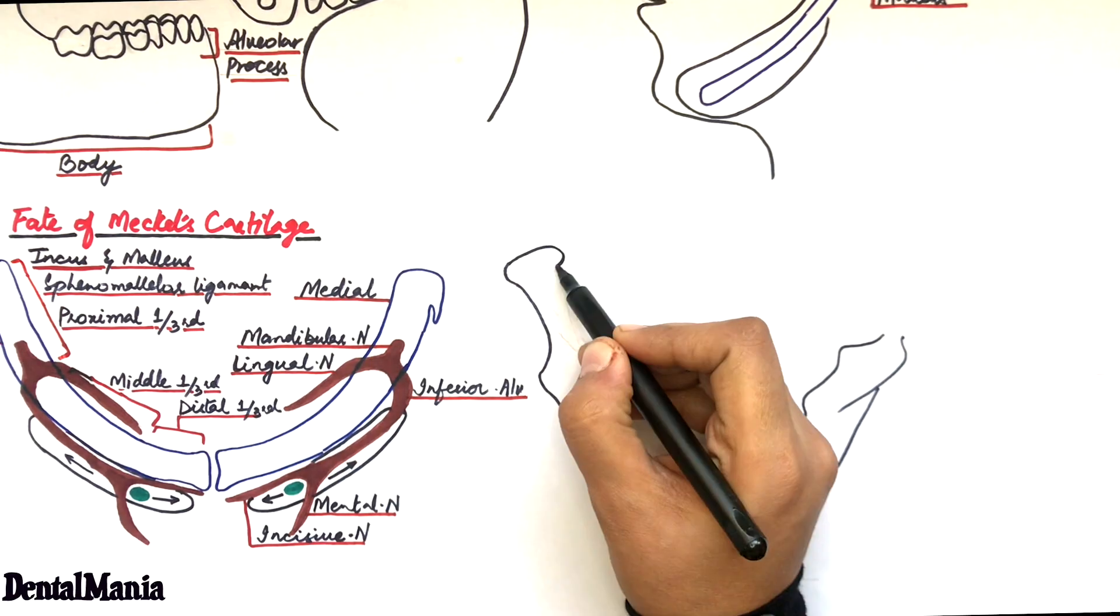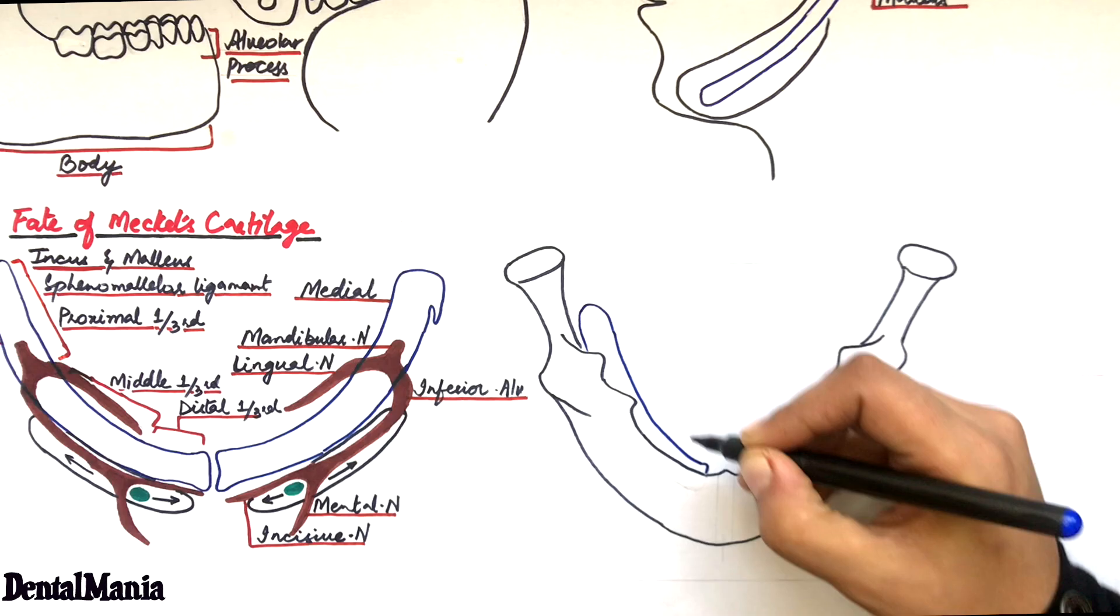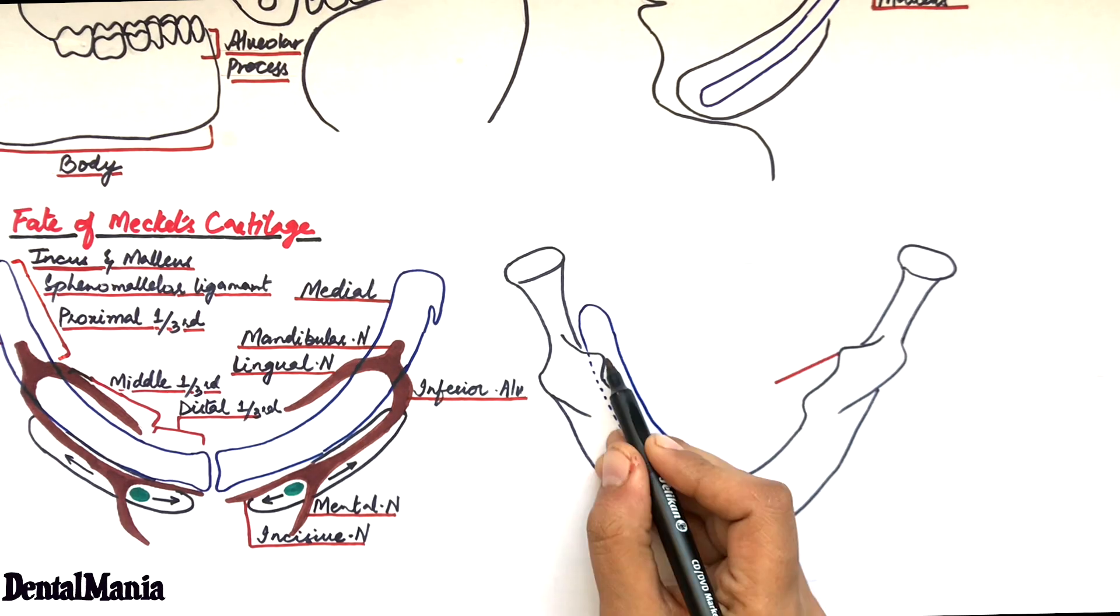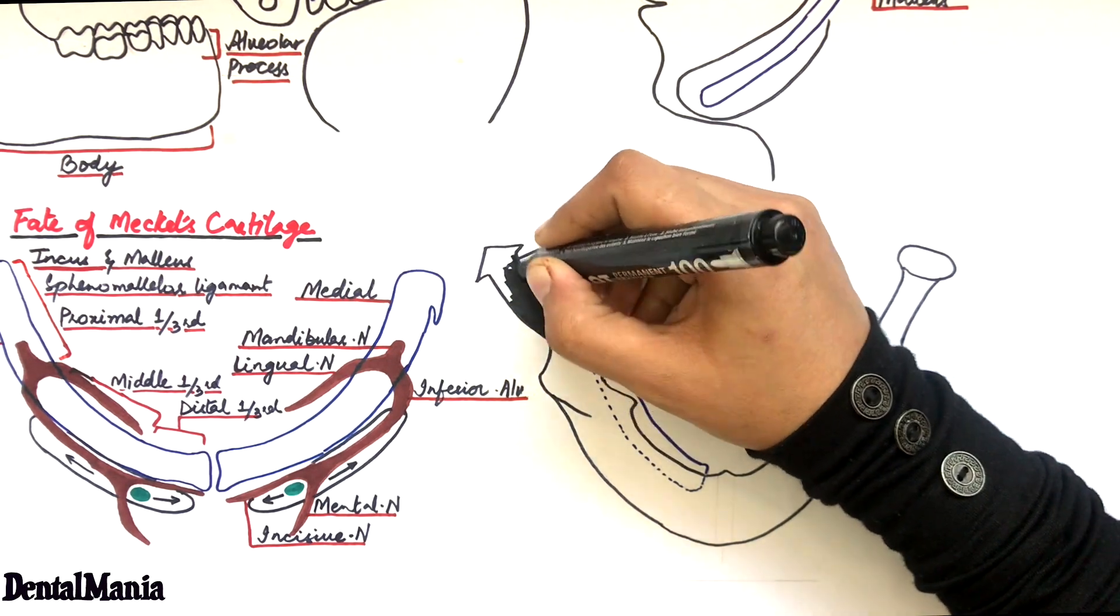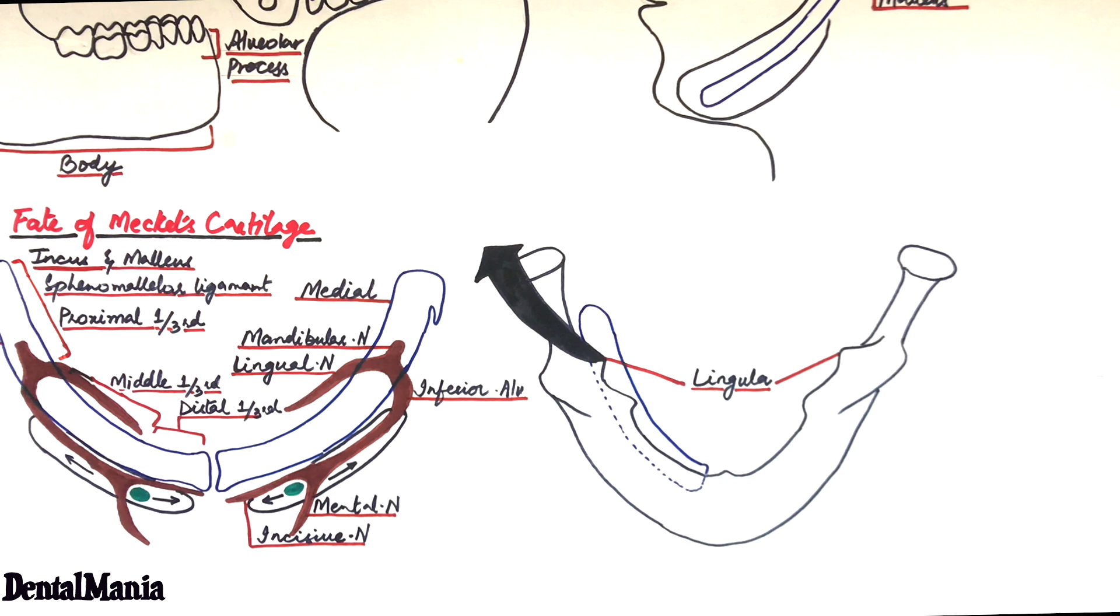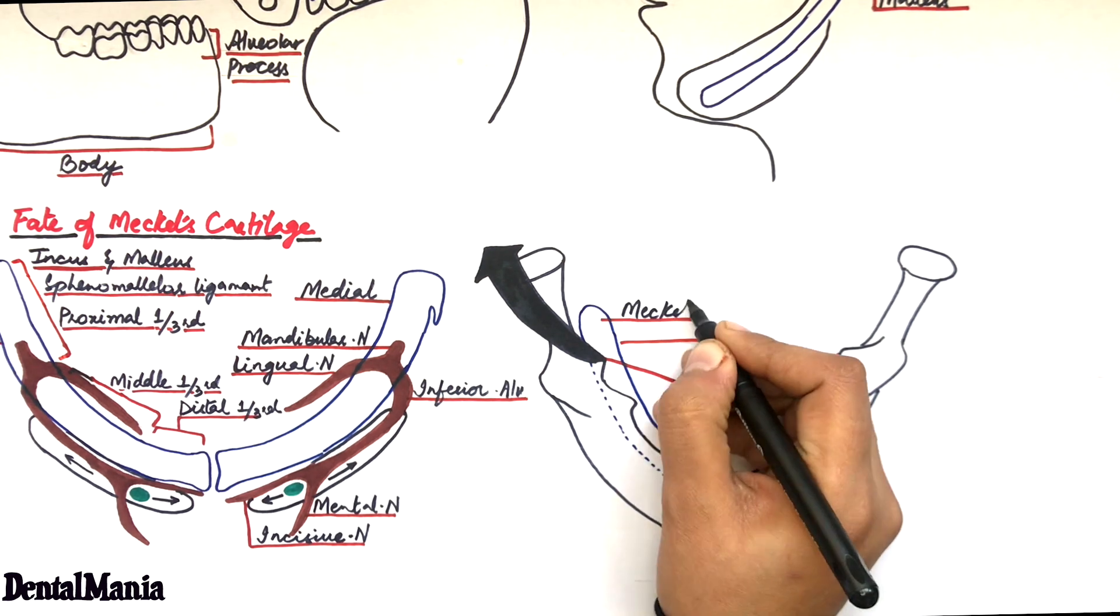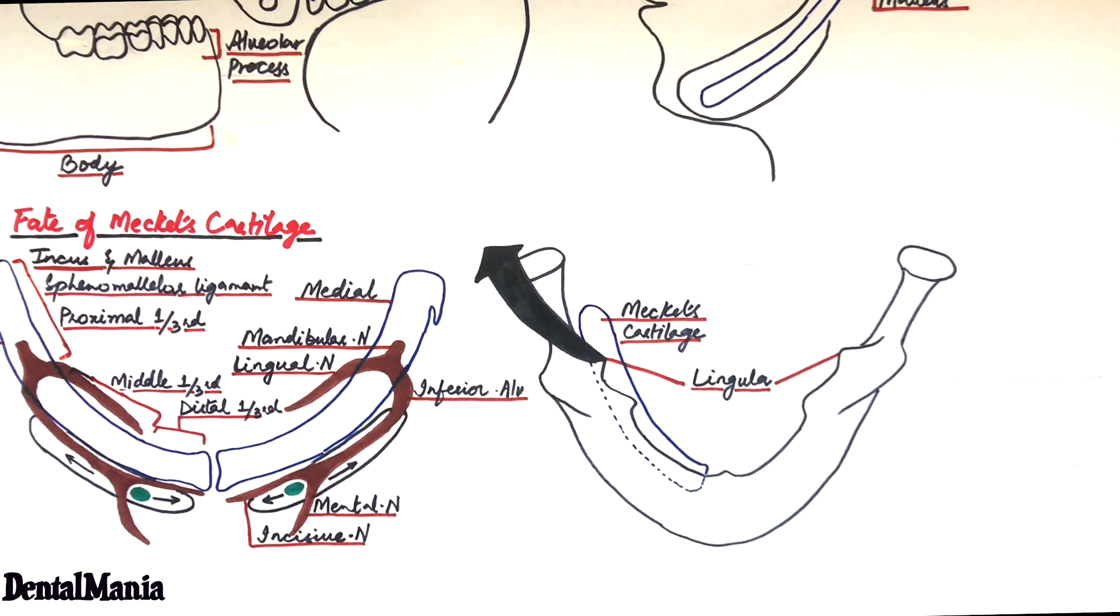In this way, the body of the mandible is formed, and this bone formation of the body of the mandible is marked by a bony tubercle called the lingula. The ramus of the mandible is formed by a rapid spread of ossification turning away from the Meckel's cartilage at the level of the lingula. Hence, the ramus is formed.